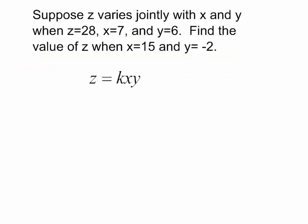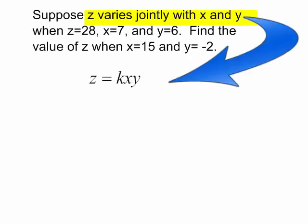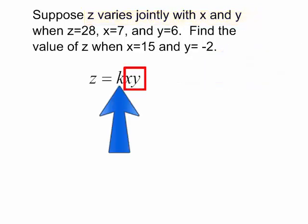Let's begin with z equals k times x times y. Because remember, it said z varies jointly with x and y.